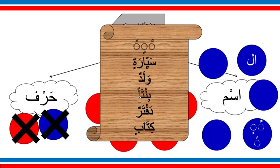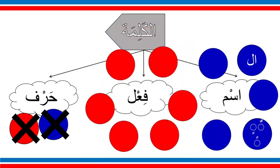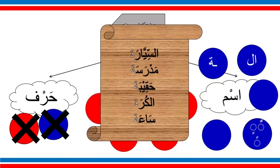The third sign, al-alama al-thalitha, is ta marbuta. If a word accepts ta marbuta it is also a noun — ism. Examples: as-sayyara, madrasa, haqiba, al-kura, sa'a. All of these words are ism because they contain ta marbuta.